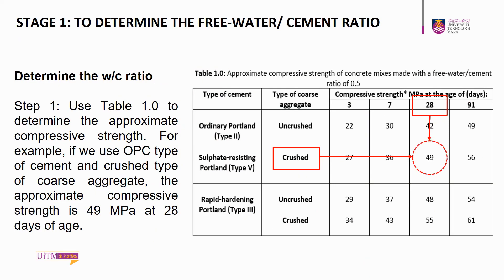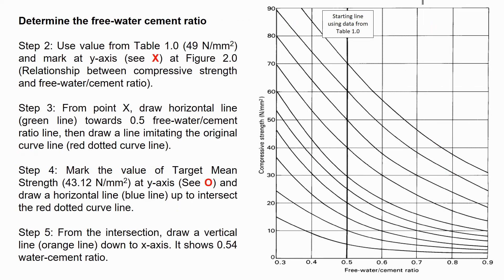The next step is to determine the water-to-cement ratio. Step 1: Table 1.0 is used to determine the approximate compressive strength. For example, if we use OPC cement and crushed coarse aggregate, the approximate compressive strength is 49 MPa at 28 days. Step 2: Use the value from Table 1.0, which is 49 N/mm², and mark it at the y-axis of Figure 2.0 at point X. Figure 2.0 shows the relationship between compressive strength and free water-to-cement ratio. Step 3: From point X, draw a horizontal line (green line) towards the 0.5 free water-to-cement ratio line, then draw a line imitating the original curve, referring to the red dotted curve line.